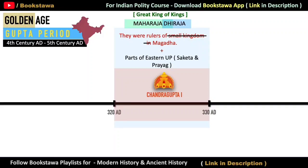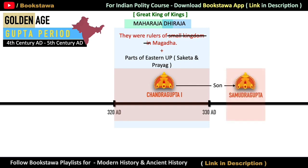Hello friends, in the previous video we started the Gupta period and covered till the rule of Chandragupta I. In today's video we are going to talk about the rule of Samudragupta, son of Chandragupta I.